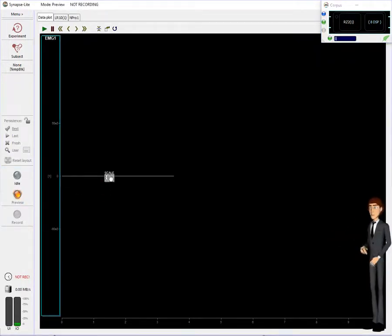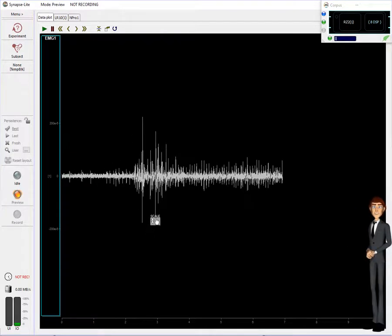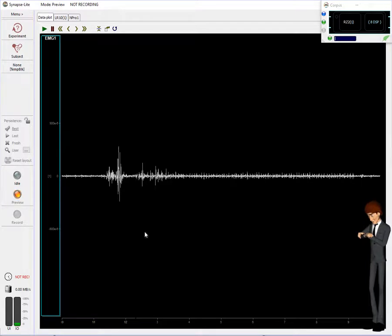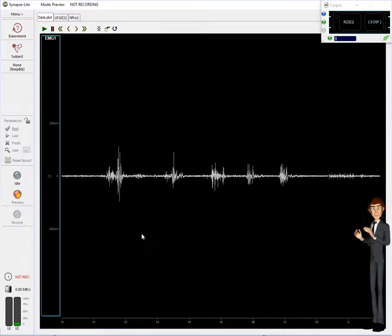This trace shows our EMG signal. Hold the shift key and drag the mouse upward to zoom the plot so we can see our signal. Relax your arm and rest it on the tabletop. Then clench your fist or wiggle your fingers to create bursts of activity. Later we'll need to detect these bursts as part of our experiment.